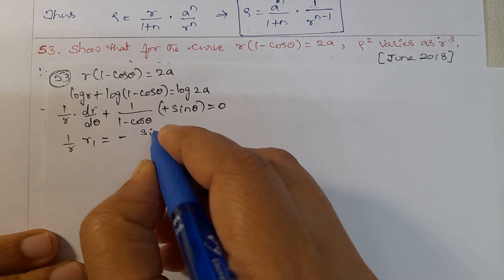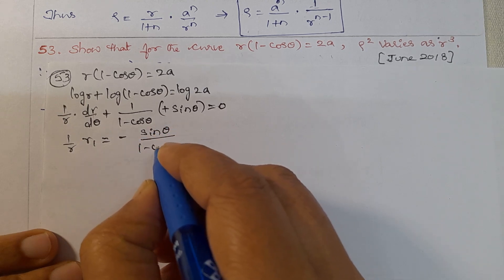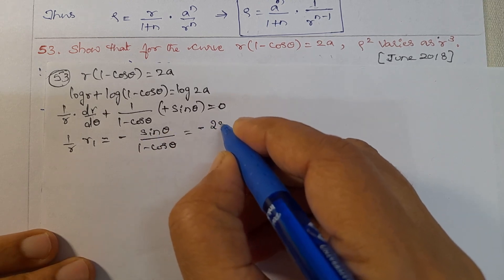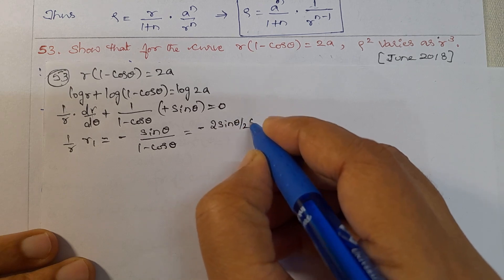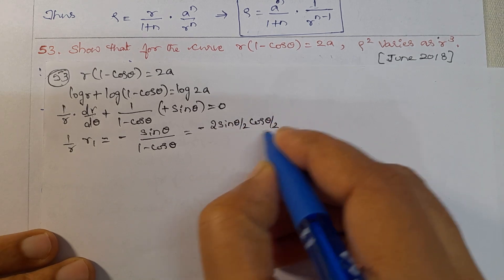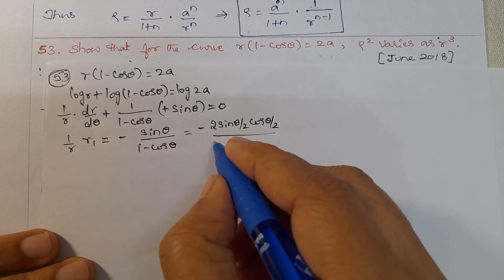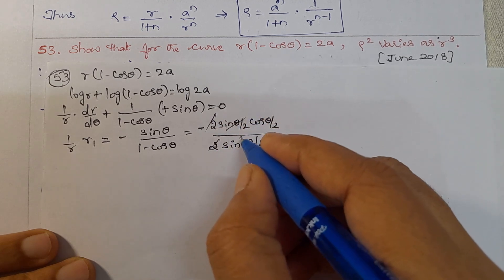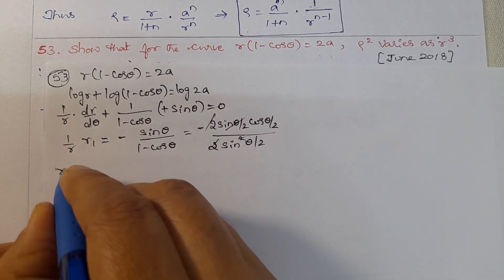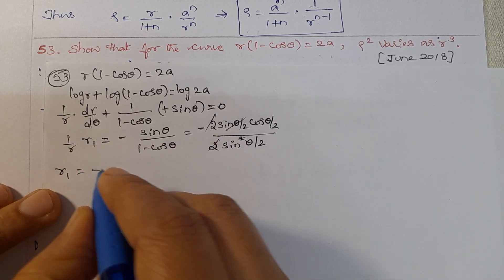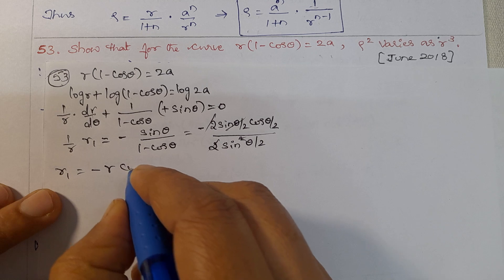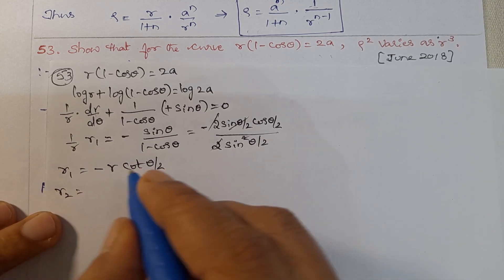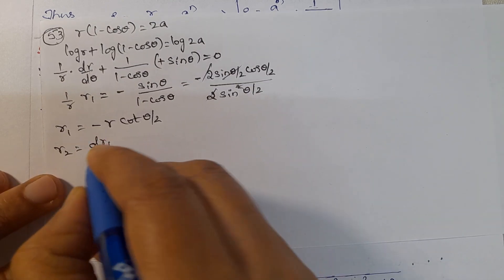So (1/r)(dr/dθ) = -sin θ / (1 - cos θ). Now, sin θ = 2 sin(θ/2) cos(θ/2) and 1 - cos θ = 2 sin²(θ/2). The 2's cancel, sin(θ/2) cancels, giving dr/dθ = r1 = -r cot(θ/2).